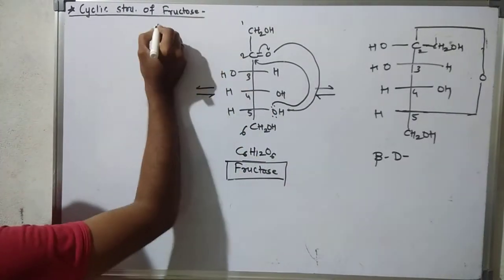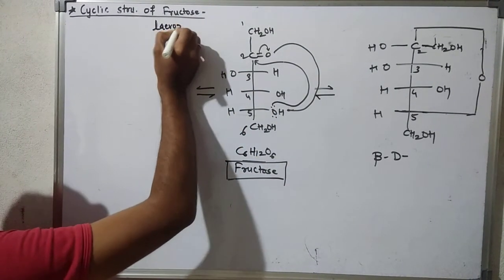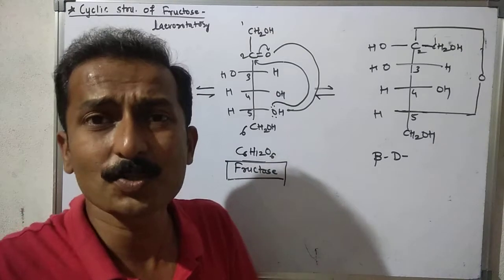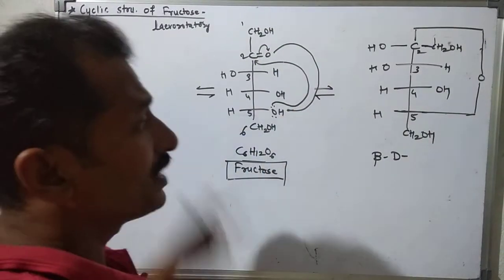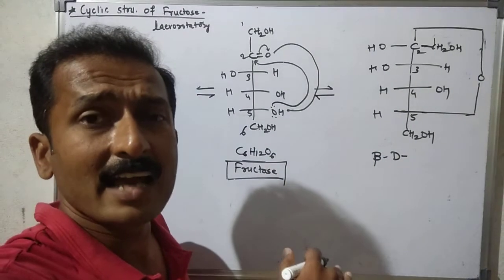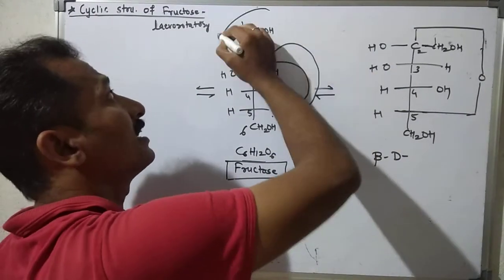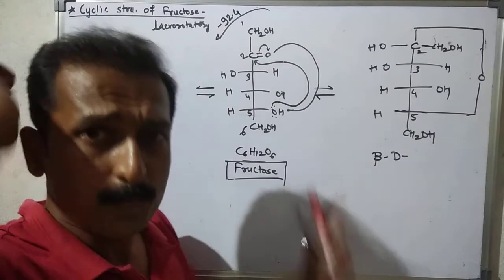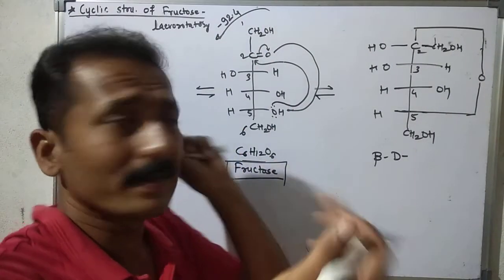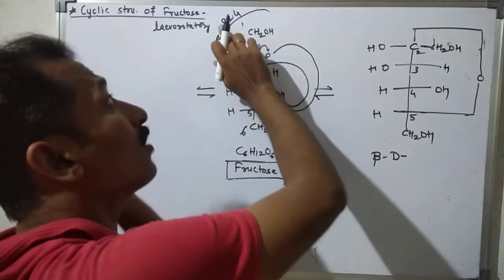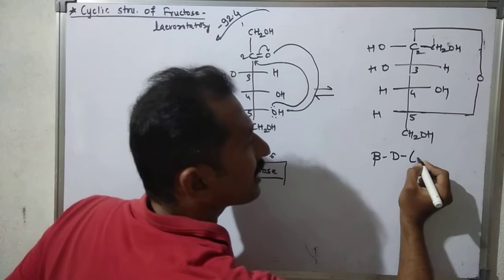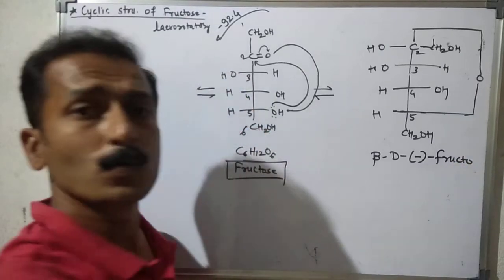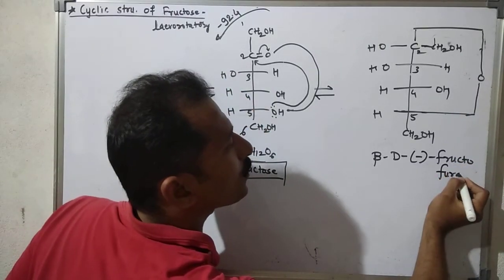Note this important point: fructose is a levorotatory sugar. Glucose was dextrorotatory, but fructose is levorotatory — it rotates plane polarized light to the left by an angle of minus 92.4 degrees (some books give 92.7 or 92.8). The rotation is negative, so you can write a small 'l' or a minus sign. This is called minus fructose.